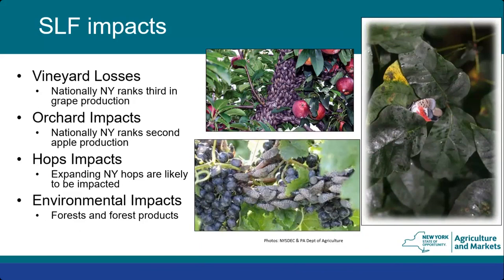One important note: spotted lanternfly does not sting, bite, or harm humans — it's not venomous or poisonous. But economically, New York ranks third in grape production nationally and second in apple production, so you can understand why widespread damage would be a significant economic loss. There are also environmental impacts on forests and forest regeneration — effects on timber, sugar maple regrowth, and maple production — that aren't fully understood yet.